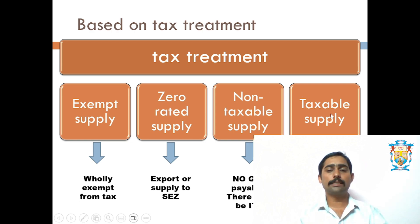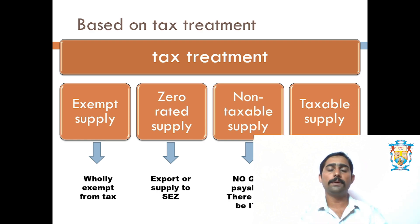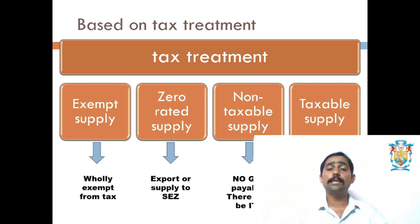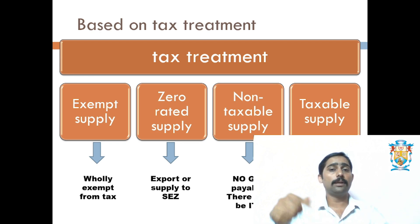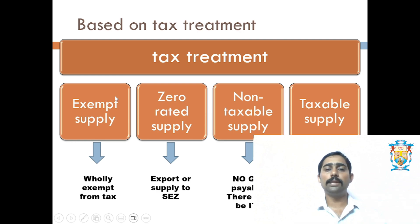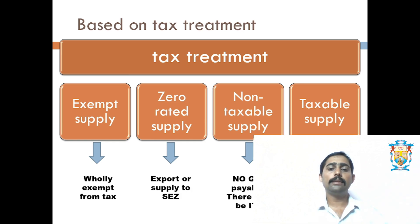Taxable supply is where we levy tax on the products — they are completely chargeable to tax. There are different tax slabs: 3%, 5%, 10%, 18%, and 28%. For basic and necessary items the tax rate is minimum, like 5%. For luxury items, more tax is levied — they come under the 28% tax bracket. So based on tax treatment: exempt supply (completely exempt), zero-rated supply (exports or deemed exports), non-taxable supply (outside GST purview), and taxable supply.